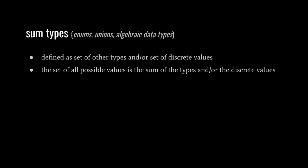What's formally known as a sum type is informally known, depending on the language, as a union, an enum, short for enumeration, or an ADT, an algebraic data type. A union is defined as a set of types. An enum is defined as a set of discrete values. And algebraic data types, found in languages like Haskell, can be composed of types like a union, but also discrete values like an enum. This example union, called cat, is a sum of two other types, tiger and panther, and so the set of possible cat values is all the tiger values plus all the panther values.